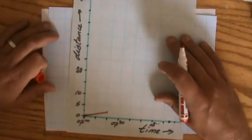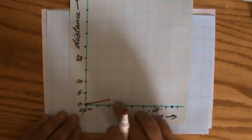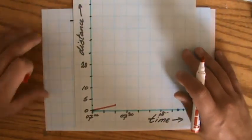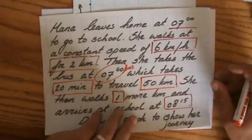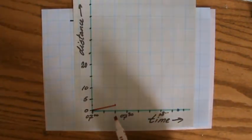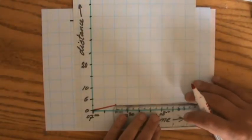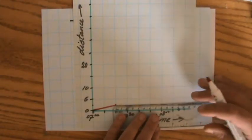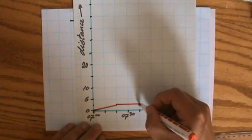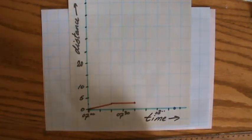On a distance-time graph, constant speed produces a straight line. Now, she takes the bus at 7:40 but she arrives at the bus stop at 7:20, so she has to wait for 20 minutes. Her distance isn't changing during that wait, so we draw a horizontal line from 7:20 to 7:40.